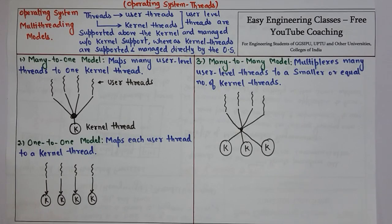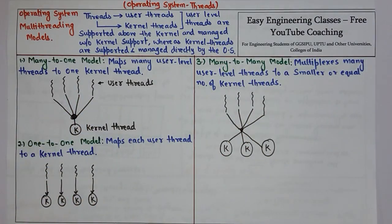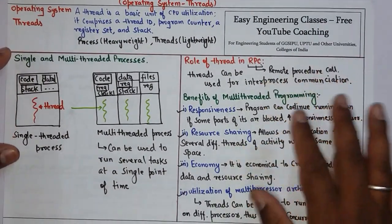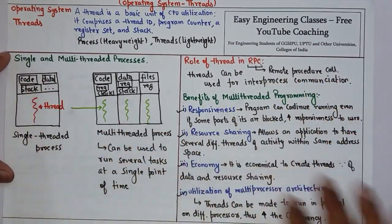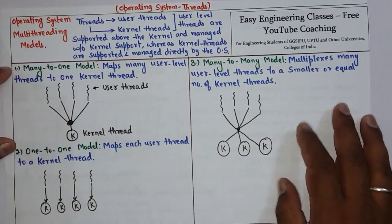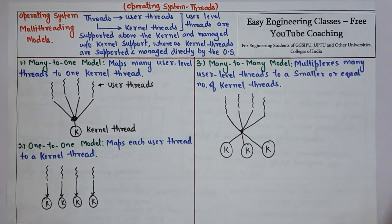This covers the threading concept in operating systems, where we have seen different kinds of multi-threading models — many-to-one, one-to-one, and many-to-many — as well as the benefits of multi-threading and single versus multi-threaded processes. Thank you for watching the video; please subscribe to the YouTube channel for more tutorials.